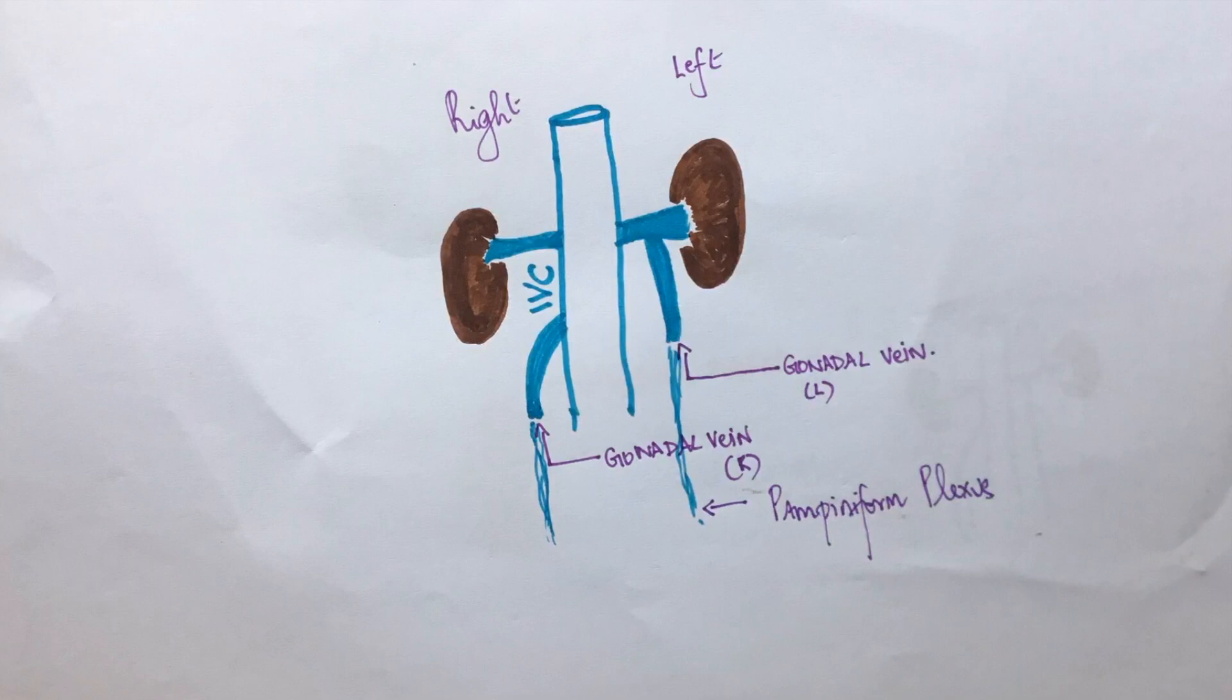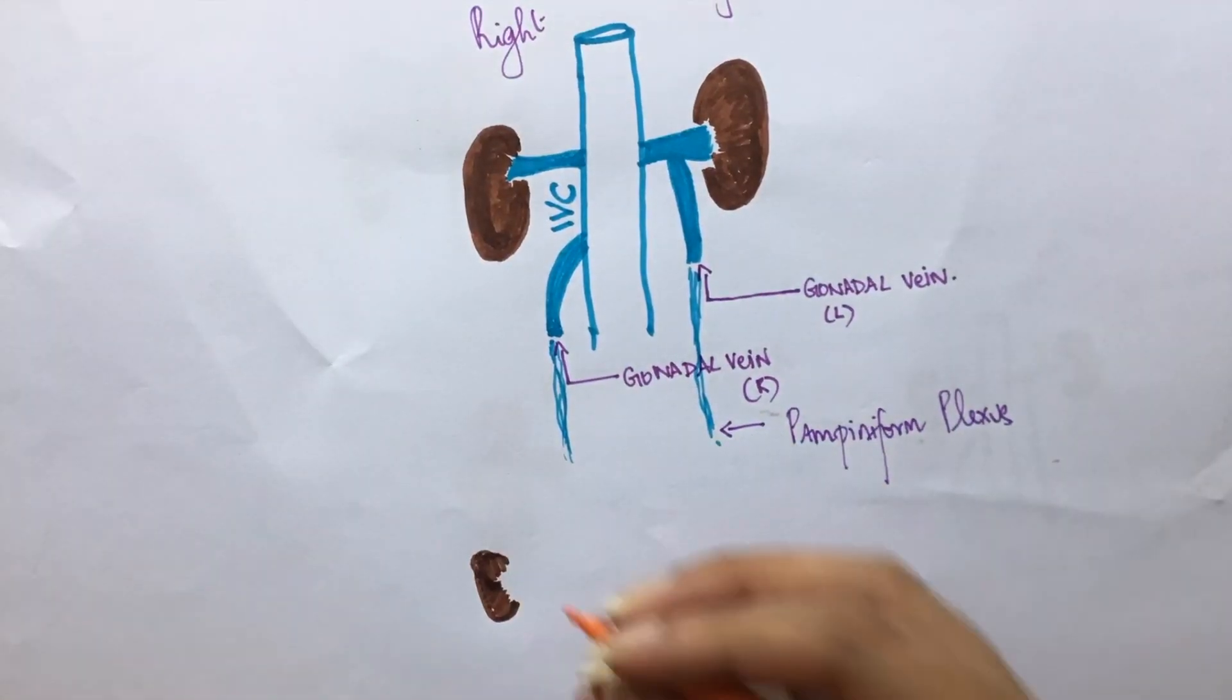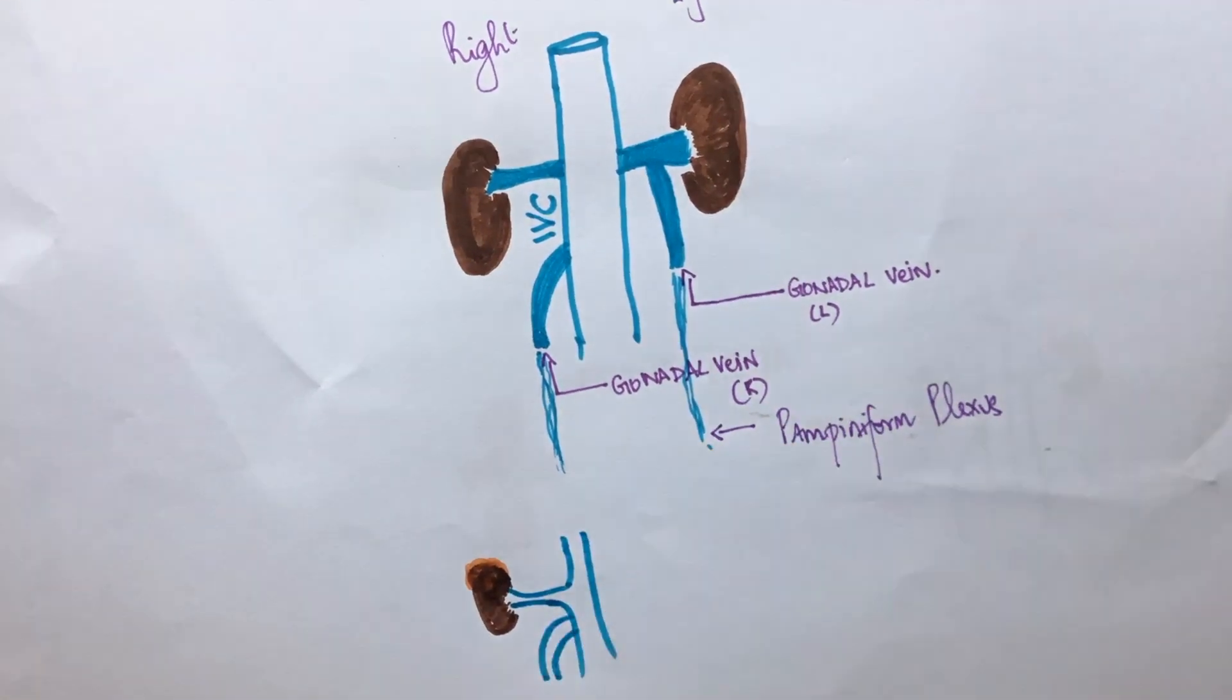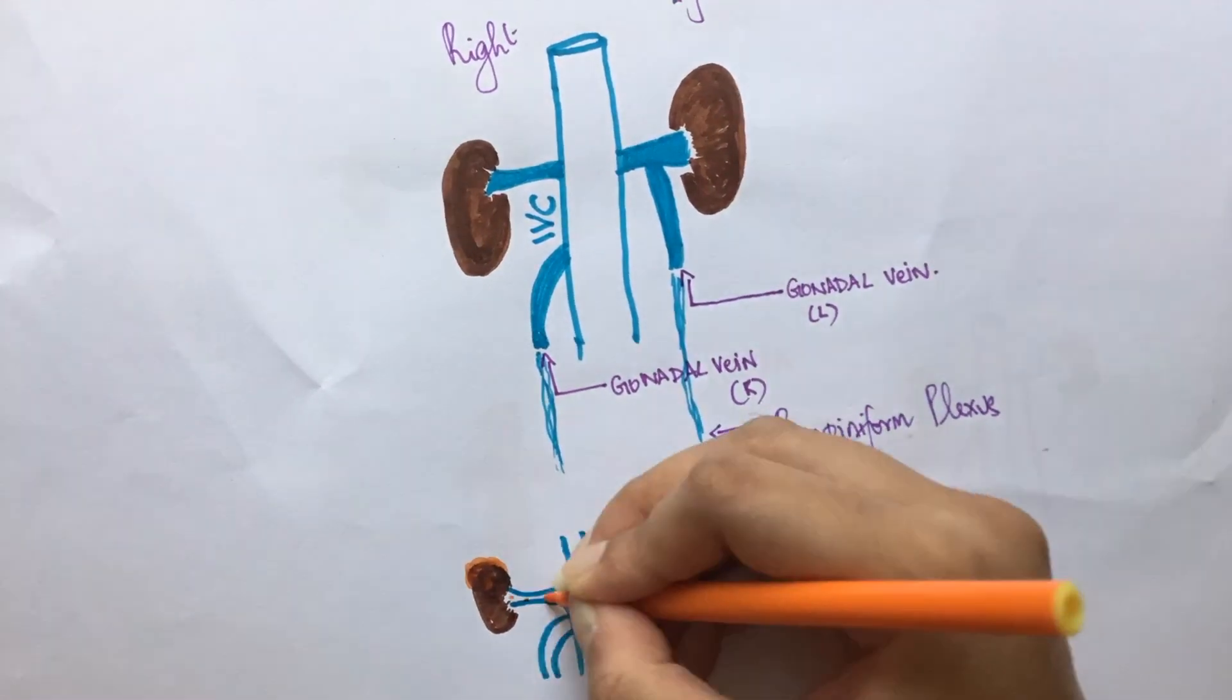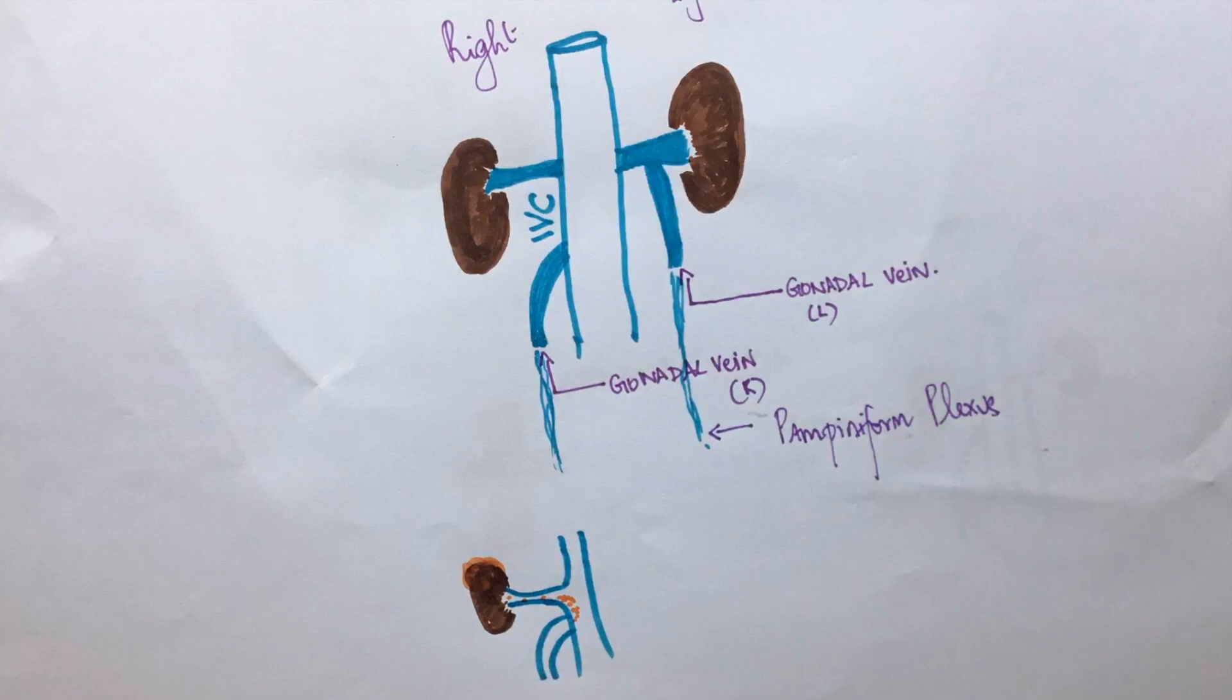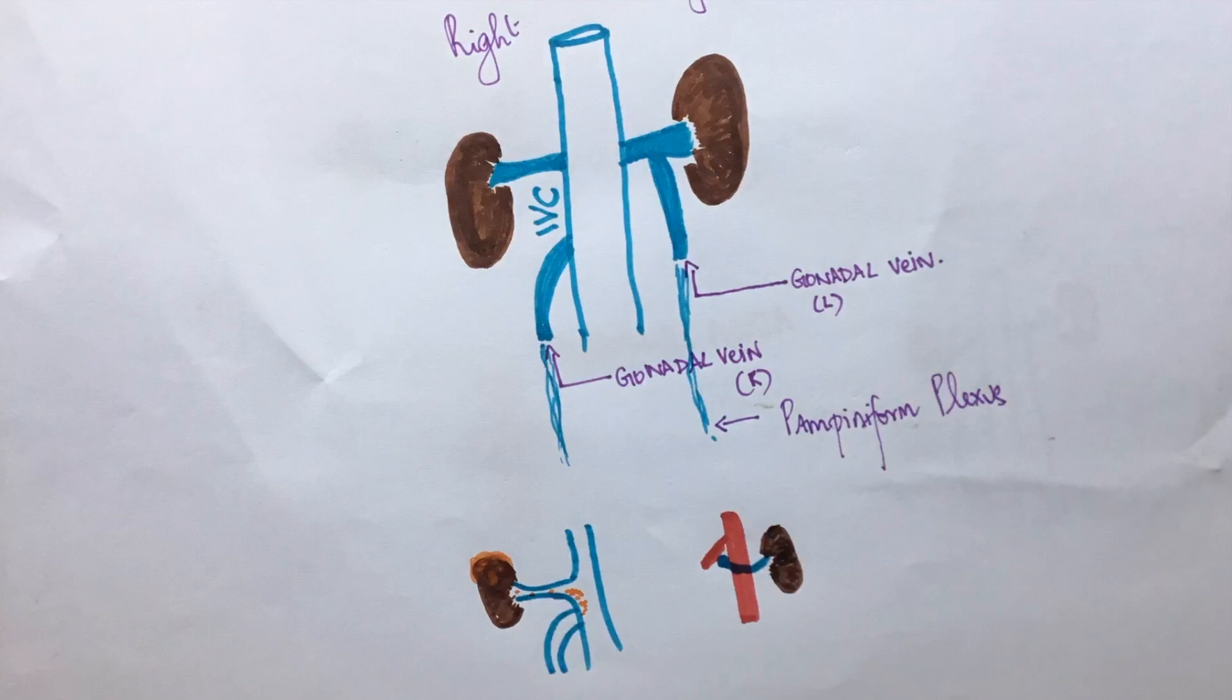In our patient, varicocele is seen on the right side, so there must be something blocking the venous drainage. In patients with renal cell carcinoma, the cancer thrombi can move through the right renal vein into the inferior vena cava. This causes venous obstruction, leading to right-sided varicocele.